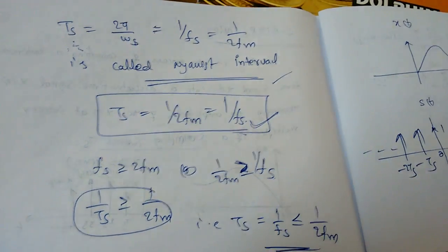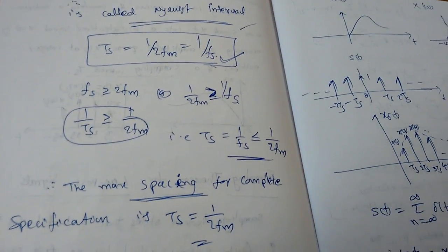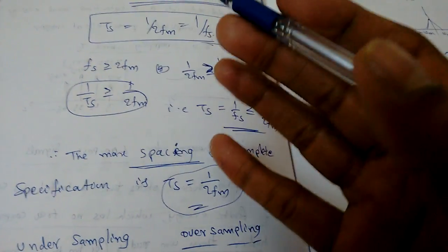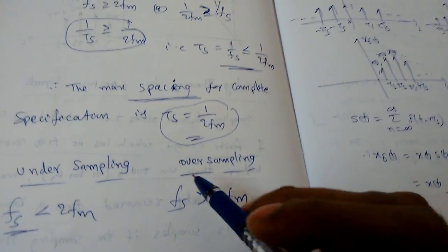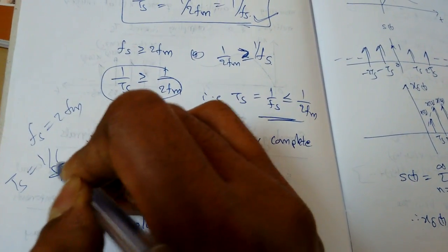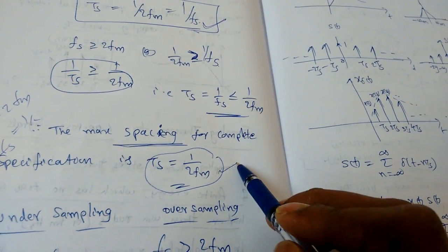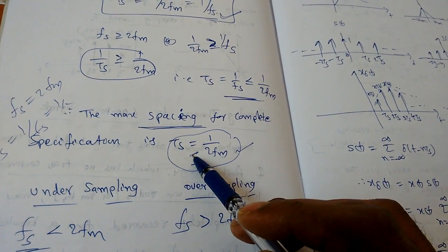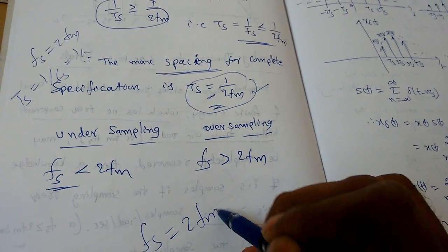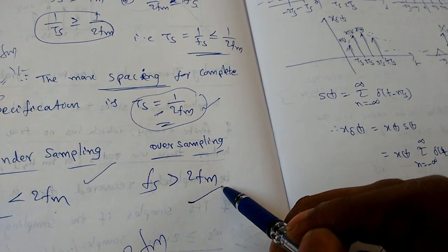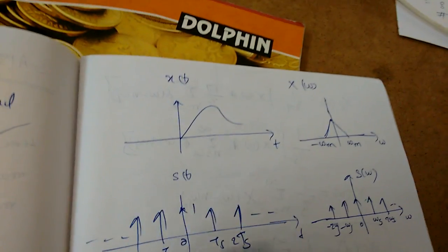The maximum spacing for complete specification is Ts = 1/(2*fm). We know fs must be at least 2*fm, so Ts = 1/fs = 1/(2*fm) is the maximum time interval spacing. When fs equals 2*fm exactly, this is called critical sampling. If fs is less than 2*fm it is called under-sampling, and if fs is greater than 2*fm it is called over-sampling. We will now see what happens in each case.